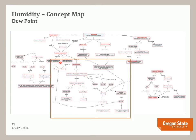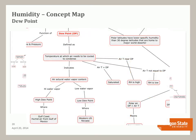Our next measure of humidity is the dew point. The dew point is defined as the temperature to which air needs to be cooled in order to condense — that is, reach saturation. When the air temperature and the dew point are the same, the air is saturated. If the air temperature is near the dew point, the relative humidity is high, meaning the water vapor volume is near the capacity of the air for that temperature. If the air temperature is far from the dew point, the relative humidity is low.